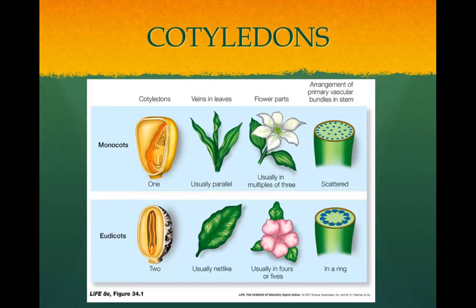Dicots have two cotyledons or seed leaves in their seeds, and they usually have branching veins in their leaves. Their flowers come in multiples of four or five petals, and the vascular bundles in the stems tend to form a ring.